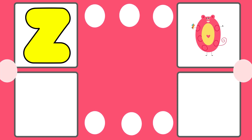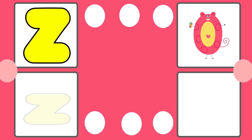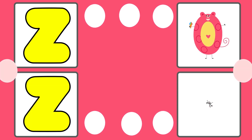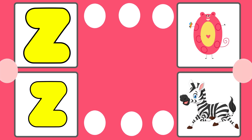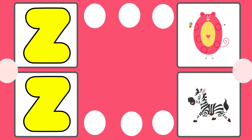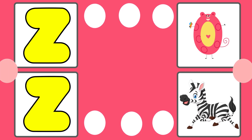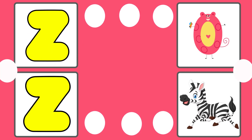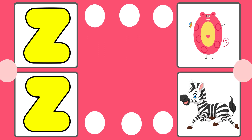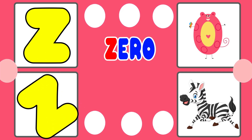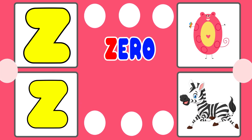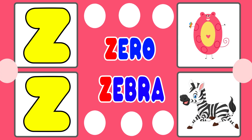Z is for Zero. Z-Z-Zero. Z is for Zebra. Z-Z-Zebra. Z is for Zero. Z is for Zero.